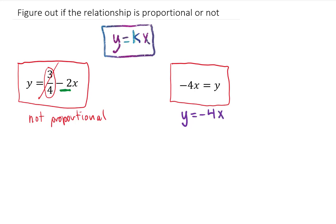Is this a line? Yes. Does it have a zero y-intercept? Yes. The slope of this equation is negative 4. So the answer to this problem is yes, this is proportional.